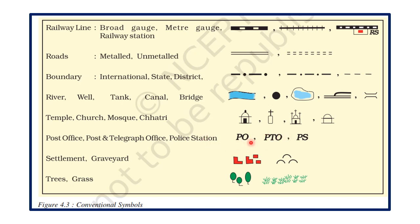PO stands for Post Office, PTO for Post and Telegraph Office, and PS for Police Station. This type of feature shows settlement — rural settlement and urban settlement — meaning village areas and rural areas where people build houses to live, called settlements.